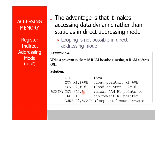A contains 0, so 0 will go to memory location 60H. INC R1 — R1 becomes 61. DJNZ R7 — R7 was 16, now it is 15, so it loops back again. Now R1 is 61, so 0 will go to 61. INC R1 makes R1 become 62.